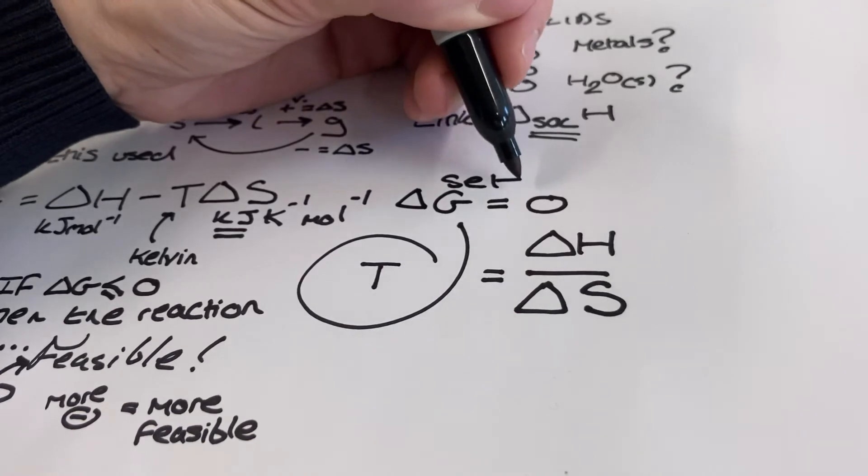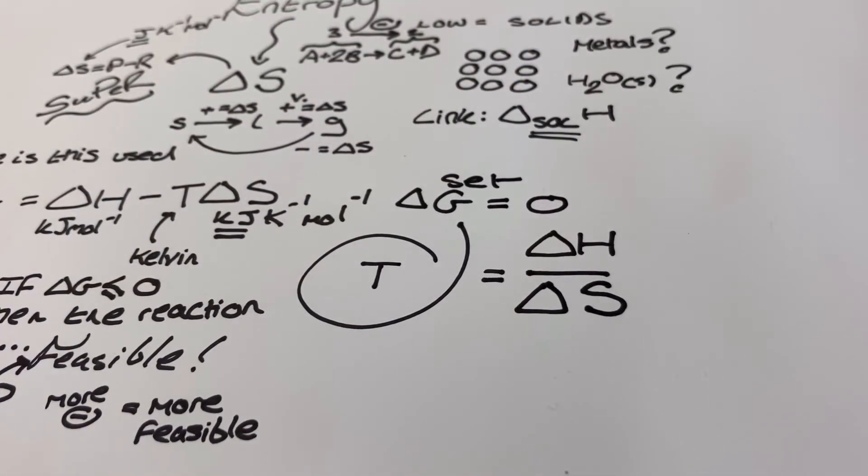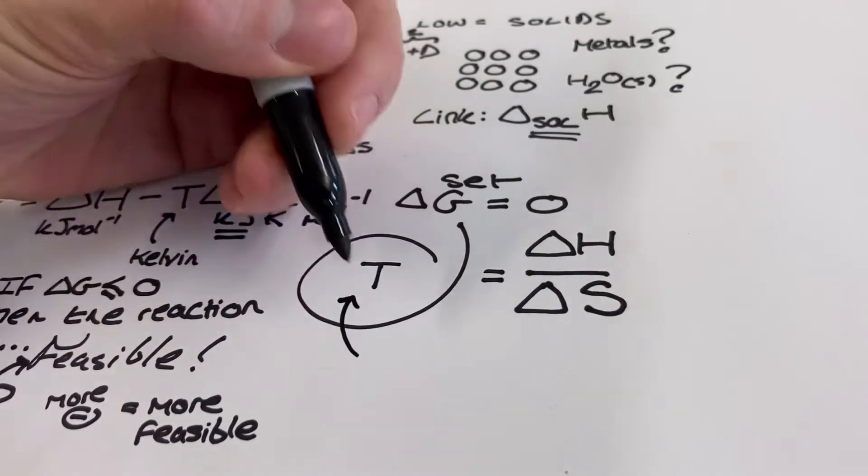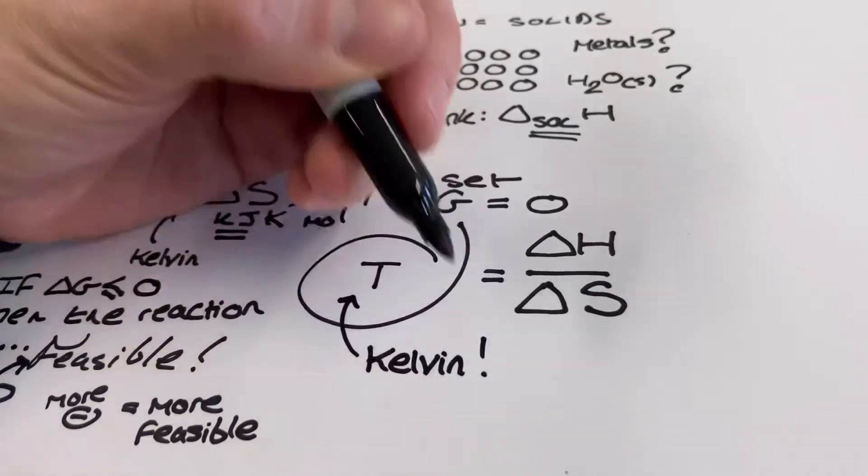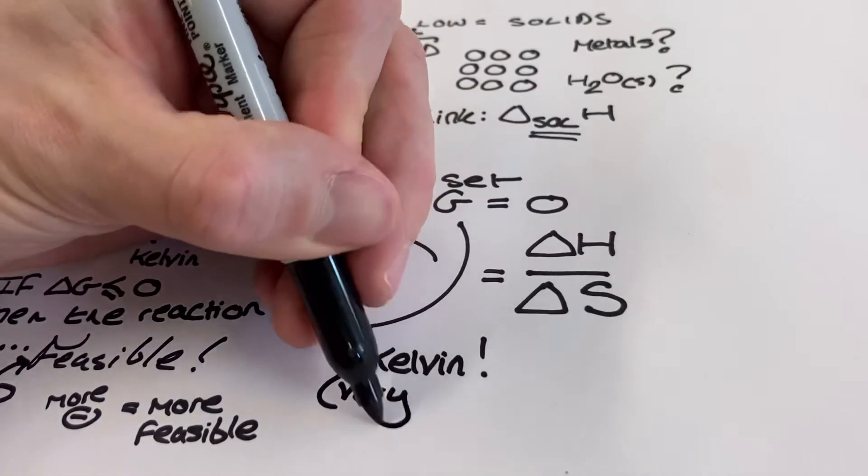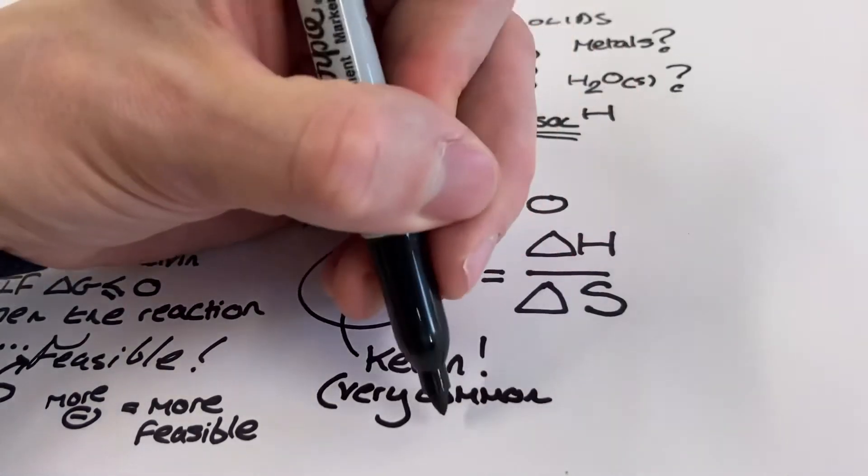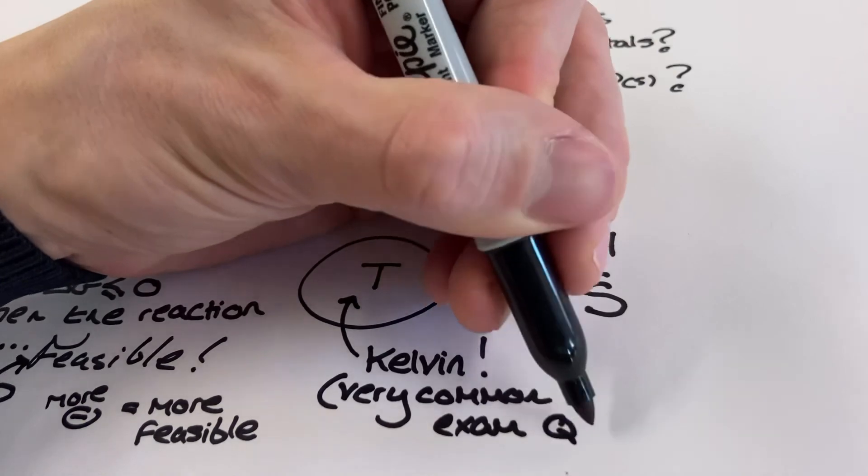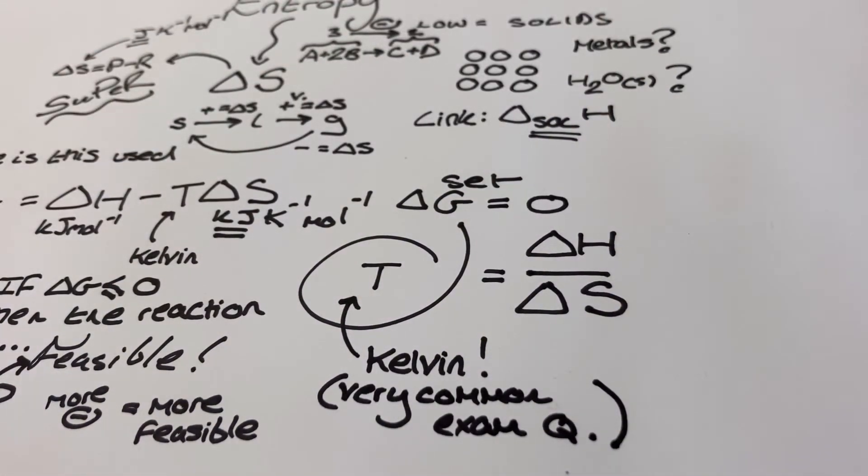So if we set ΔG equal to zero, which is the minimum requirement for a reaction to be feasible, then rearrange our Gibbs equation as a subject of temperature, giving us ΔH divided by ΔS, then this is the temperature at which the feasibility of the reaction changes. And it's a very common exam question. Make sure you show that ΔG equals zero in your answers. The temperature here will come out in Kelvin, but only if you use the correct units for ΔH and ΔS. ΔH is kilojoules per mole and ΔS must be kilojoules per Kelvin per mole. So any joules per Kelvin per mole ΔS values that you've got will need dividing by a thousand first.